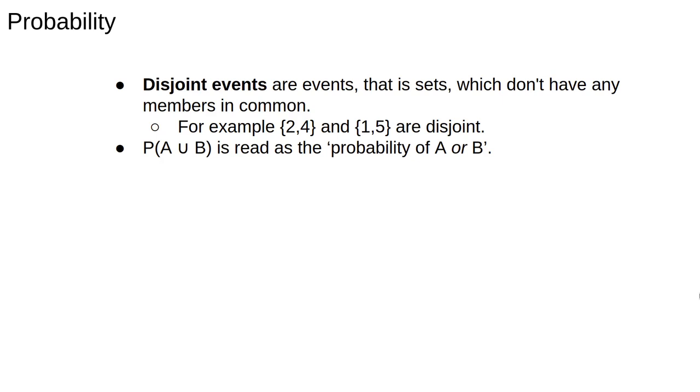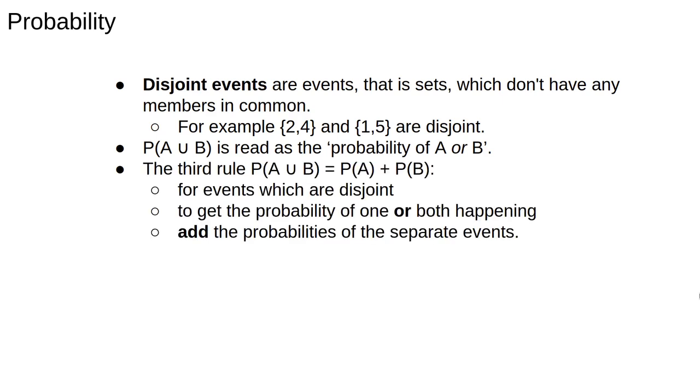So probability of A union B is sometimes read as the probability of A or B. And it's important to remember that this is logical or, so it means A or B or both. Therefore, the third rule of probability says that for events which are disjoint, to get the probability of one or both happening, we add the probabilities of the separate events.